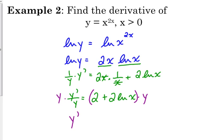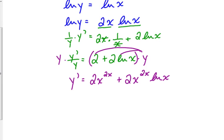And then we just need to multiply both sides by y. So y prime equals 2x to the 2x times distributing the 2, then we've got plus 2x to the 2x times the natural log of x. Probably would be nicer to have that in factored form, as opposed to the way I have it right here. Factored out that 2x to the 2x: 1 plus the natural log of x.